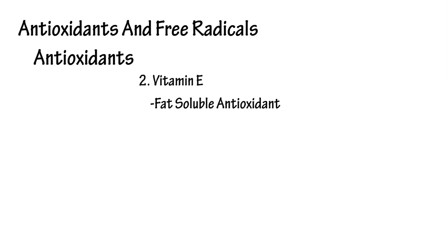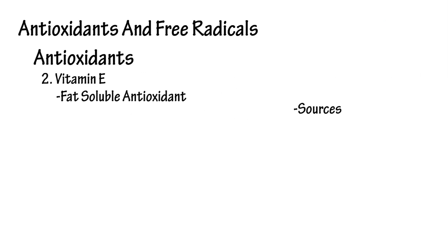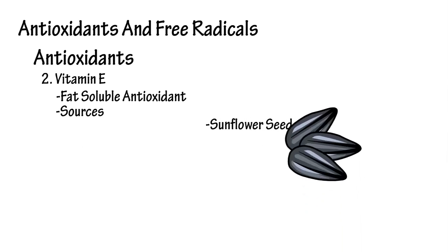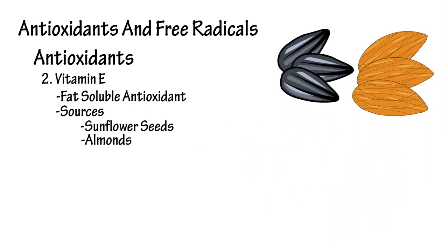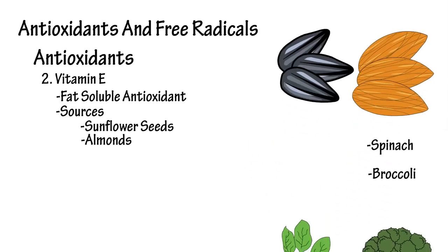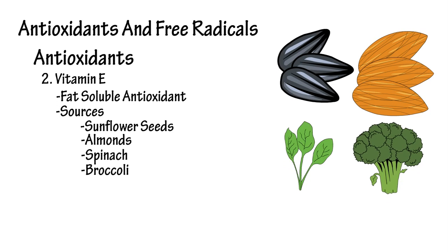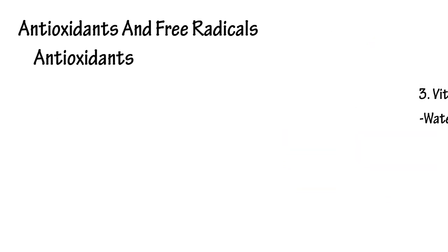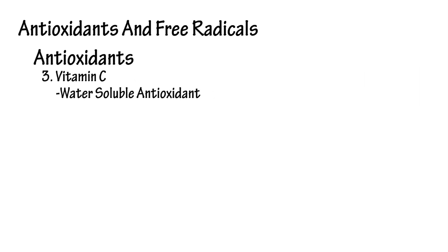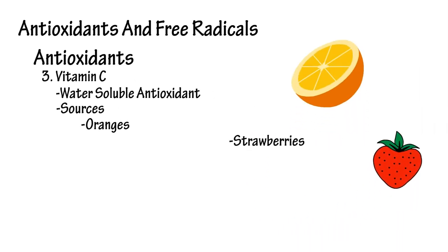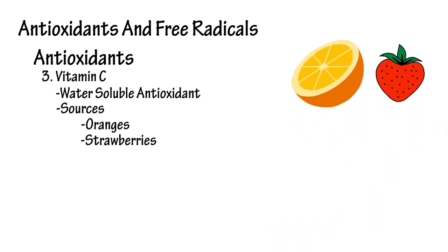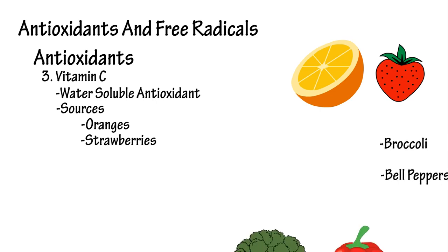Vitamin E is a fat-soluble antioxidant and is found in sunflower seeds, almonds, spinach, and broccoli. Vitamin C is a water-soluble antioxidant and is found in oranges, strawberries, broccoli, and bell peppers.